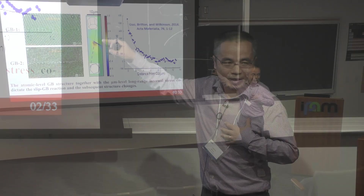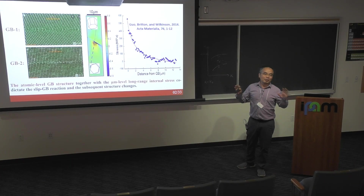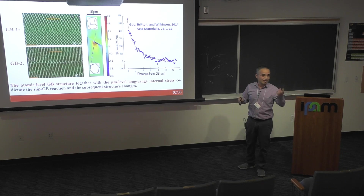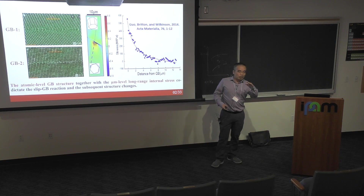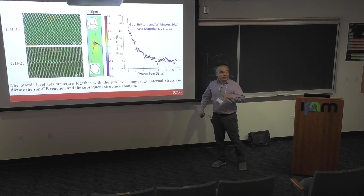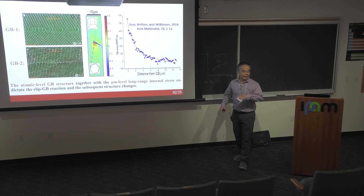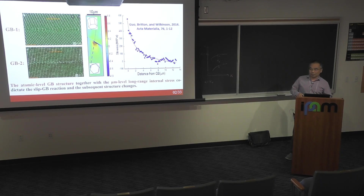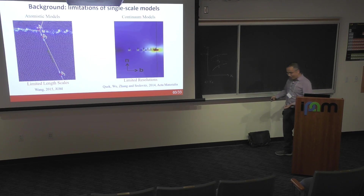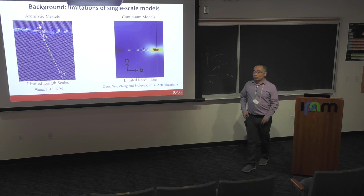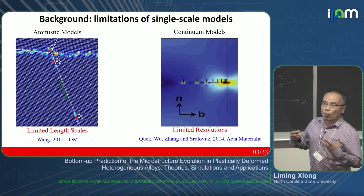High stress does exist, though many people do not think so. We are arguing that local atomic grain boundary structure and this large local internal stress co-dictate the subsequent reaction mechanism — whether you see twinning or slip transfer. Those are the two reasons we want to figure out the effect of those two factors.